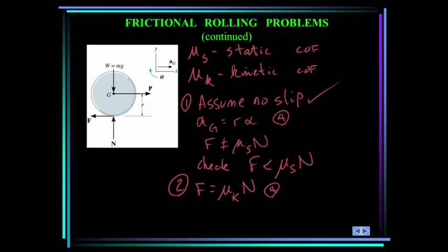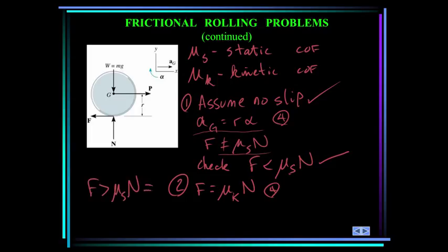To summarize: when solving a problem where you don't know if the wheel, disc, or cylinder is slipping, first assume it's not slipping, so acceleration of mass center equals R times alpha. Do not assume frictional force equals mu_s times N. Solve the problem, get a value for F, and check it. If F is greater than mu_s times N, move to step two and assume frictional force equals mu_k times N, then solve. I'll do an example later so you can see how this works.